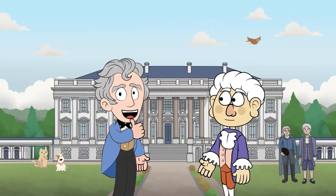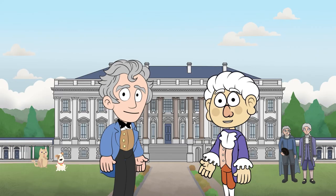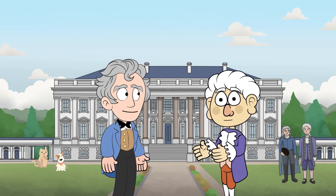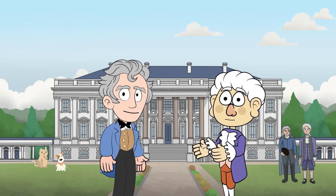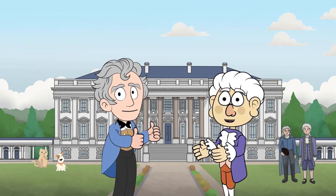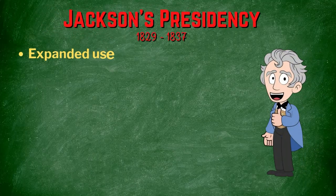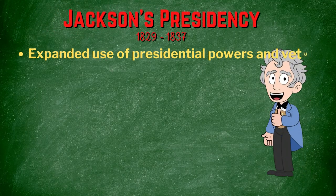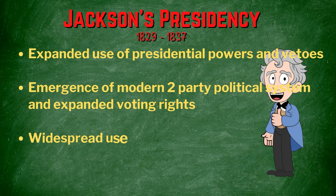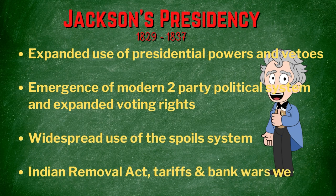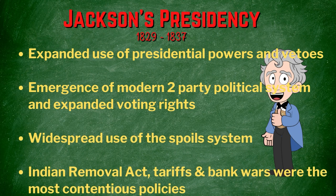Ironically, Jackson is now on that paper money himself. The age of Jackson has had long-lasting influence on American politics today — his use of expansive presidential powers and vetoes, his reconfiguring of political parties, his wide use of the spoils system, and his support of the Indian Removal Act all cemented Jackson as a definitively polarizing president.